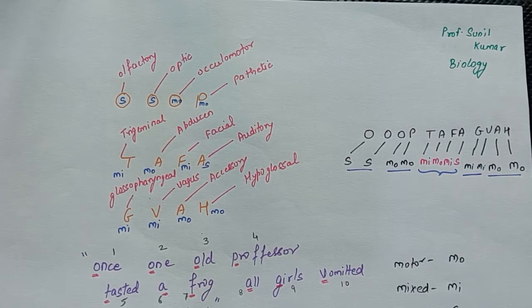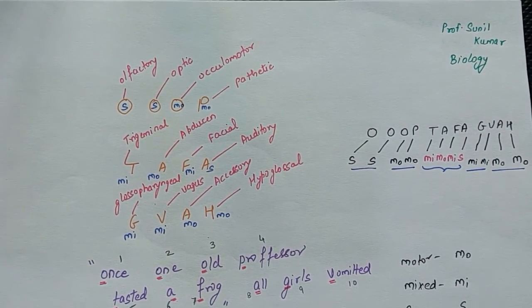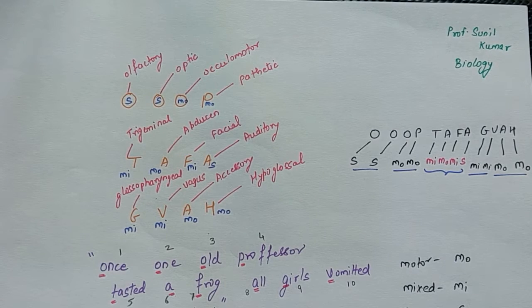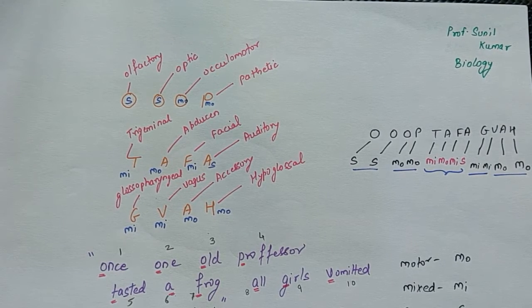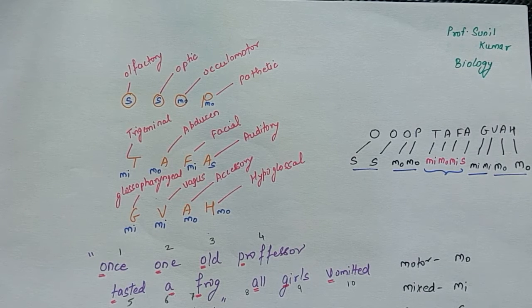Hi friends, I am back with a new video. In today's video we are going to talk about the 12 pairs of cranial nerves, but in a different format. Just a quick recap that all 12 pairs of cranial nerves are there with their nature — whether they are sensory, motor, or mixed.